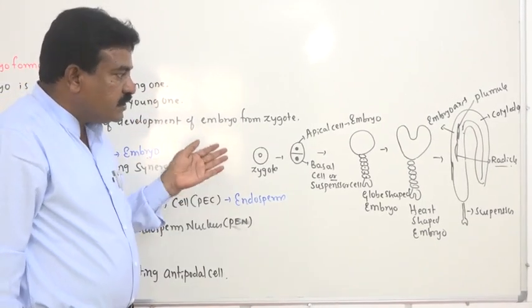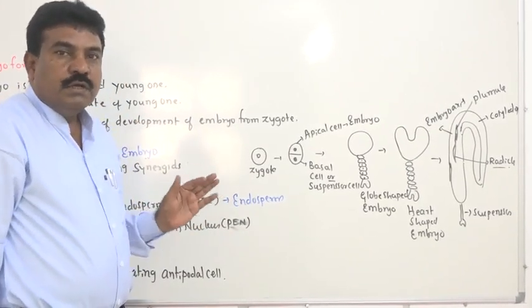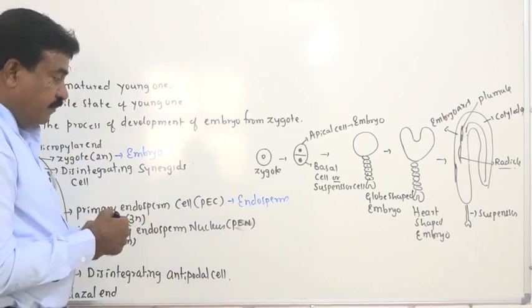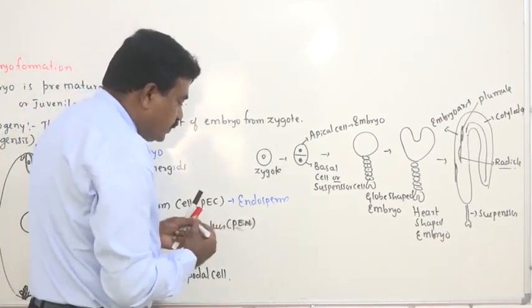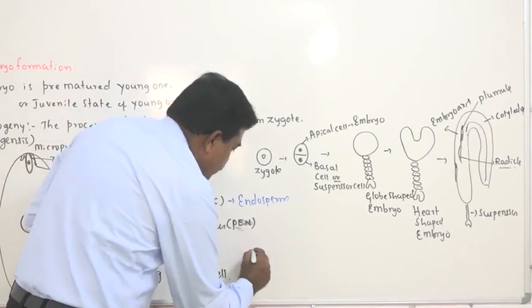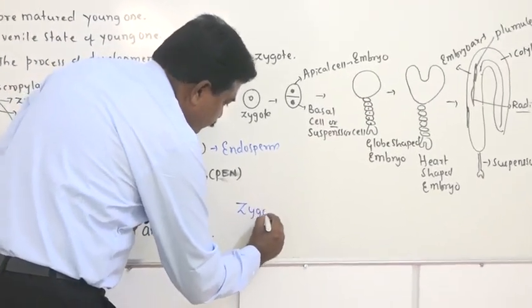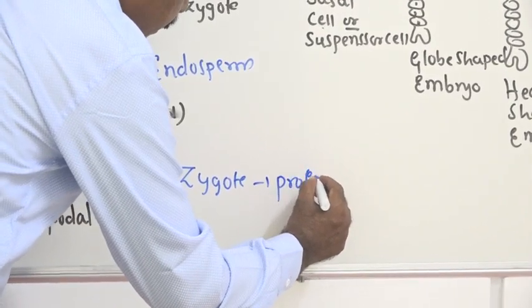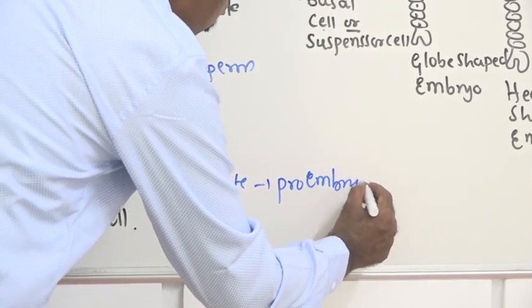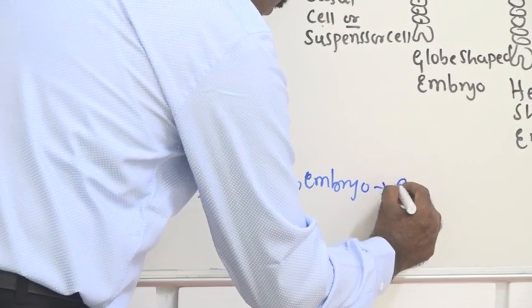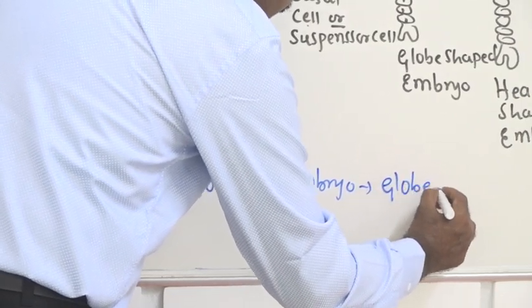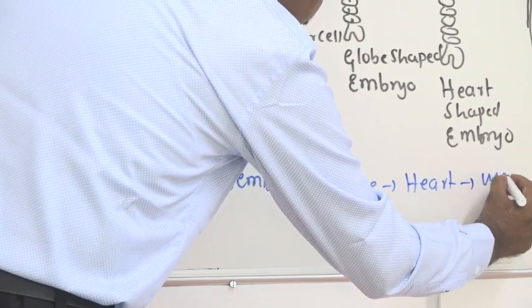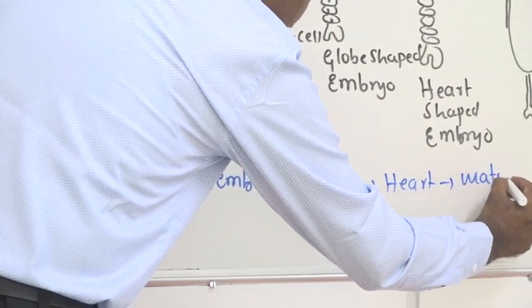In case of monocot and dicot, the basic principle of embryo development remains the same. The steps include: first the zygote becomes a pro-embryo, meaning a primitive embryo, then that embryo becomes globe-shaped, then heart-shaped, and finally the matured embryo is formed.